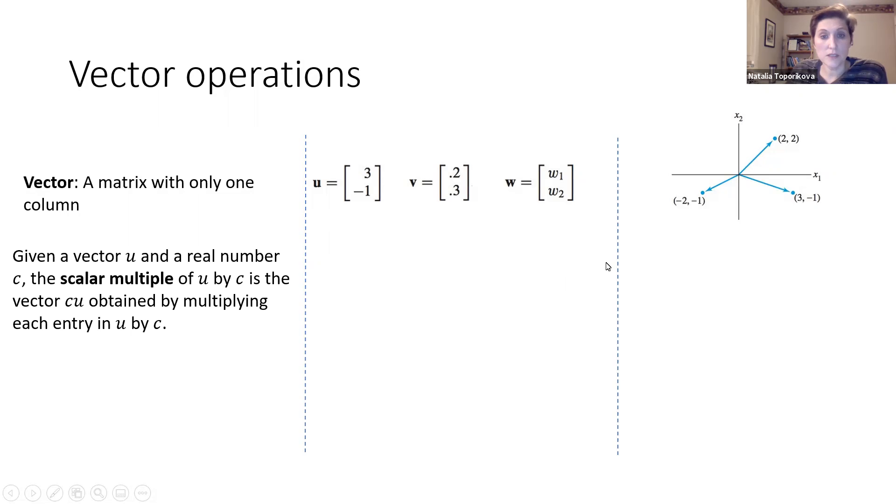We can do several mathematical operations with vectors. For example, we can multiply a vector by a number, which is usually called scalar multiplication. The scalar or number is usually denoted by a letter c, but not necessarily. For example, let's take our favorite vector and multiply it by the number 5.